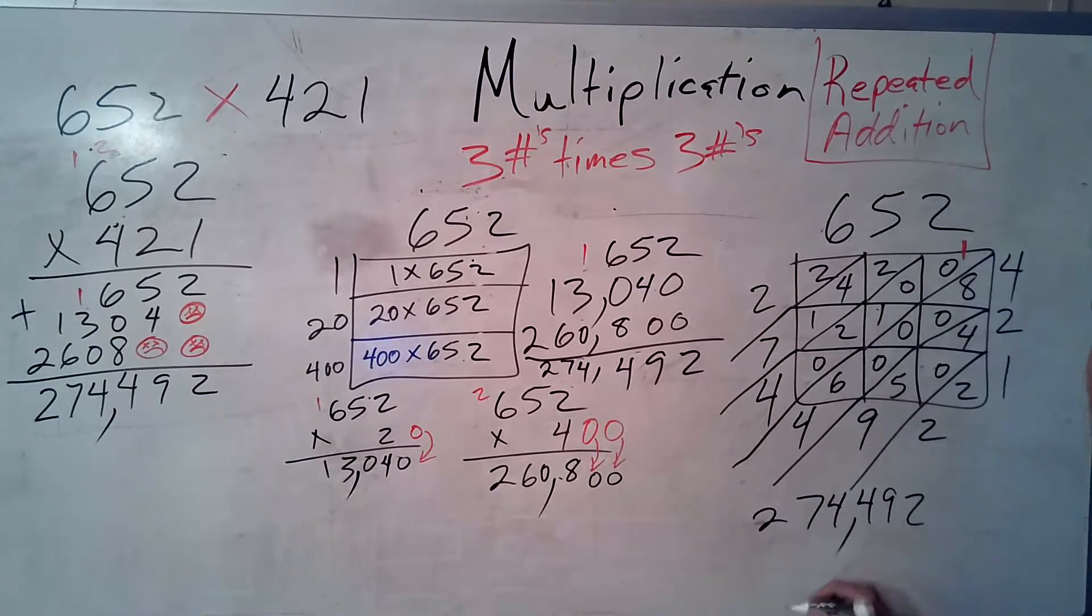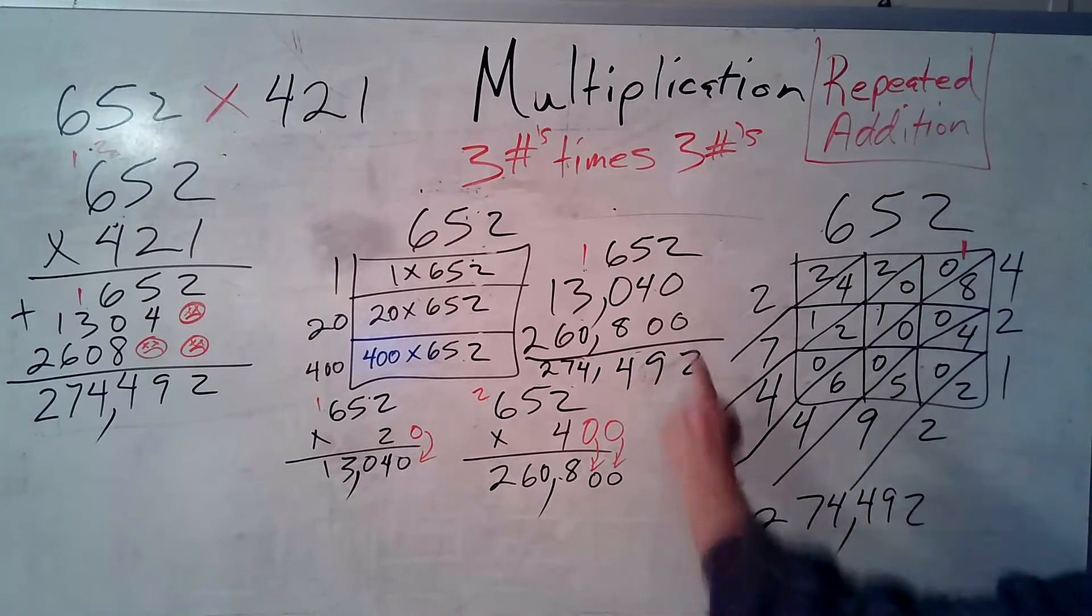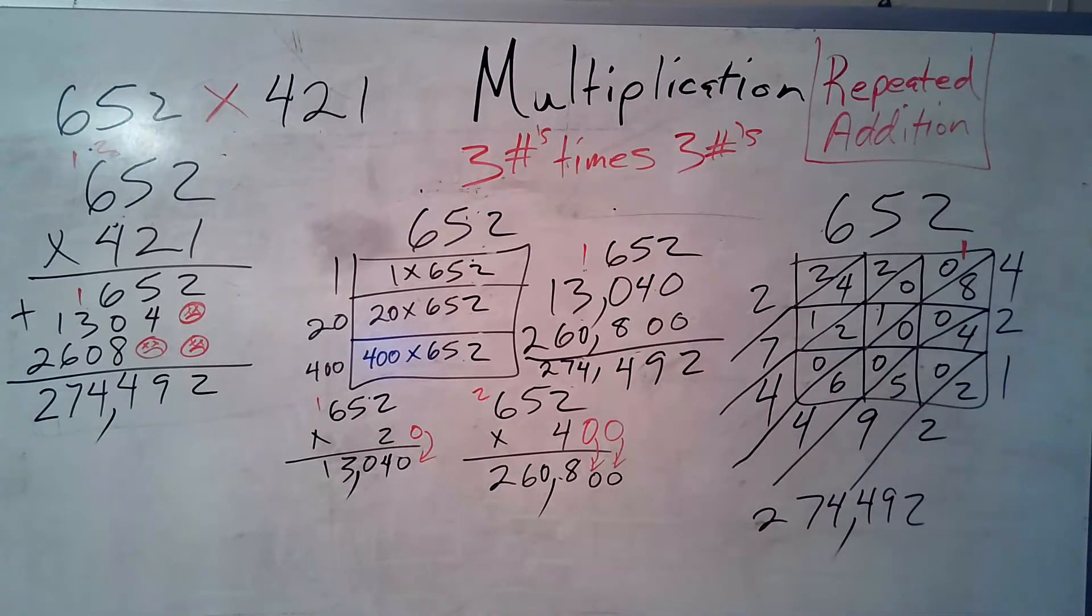2, 7, 4, 4, 9, 2. 1, 2, 3, comma. Ooh. What does that look like? 2, 7, 4. 2, 7, 4. 4, 9, 2. 4, 9, 2. Does everybody match?